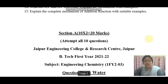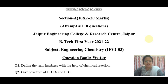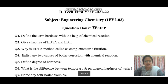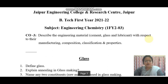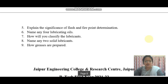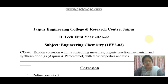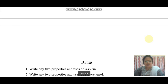Section A has 10 questions, 2 marks each, totalling 20 marks, and you have to attempt all 10 questions. For this, follow the question bank which has already been shared with you. The question bank covers Water, Fuel, Glass, Cement, Lubricant, Corrosion, and Drugs. Different questions are there; I have already shared them and given an assignment based on these questions, so you can also refer to your assignment.